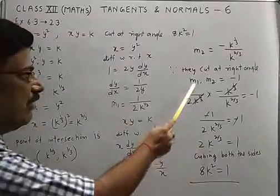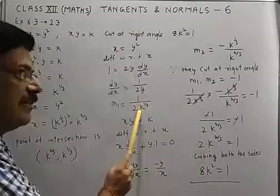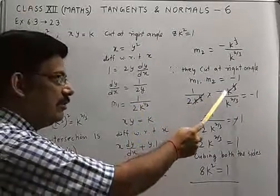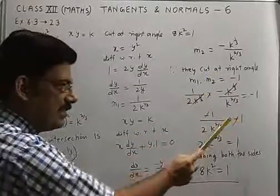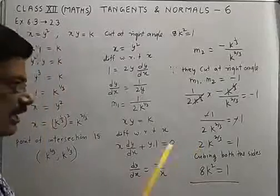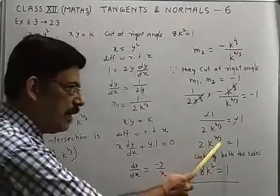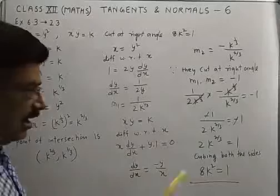Put the value of m₁ that is given and m₂ that is given. Cancel this and cancel minus sign, you get an expression that 2k^(2/3) = 1.